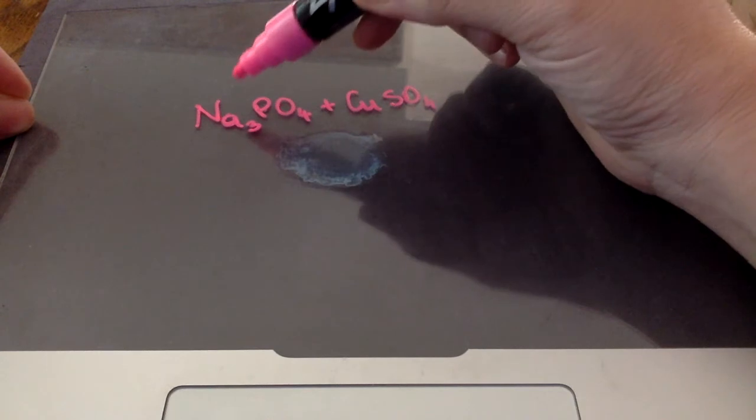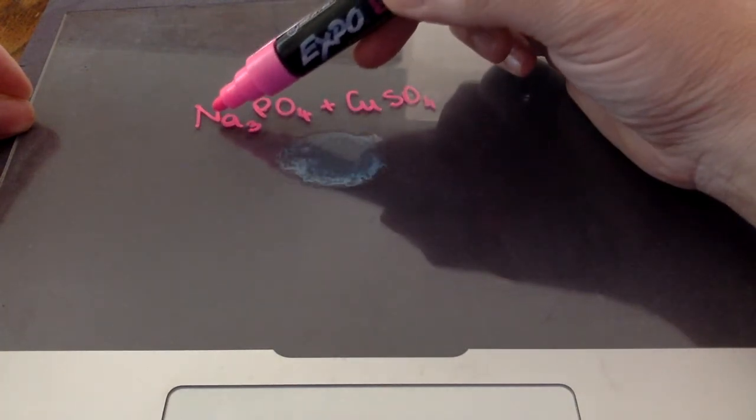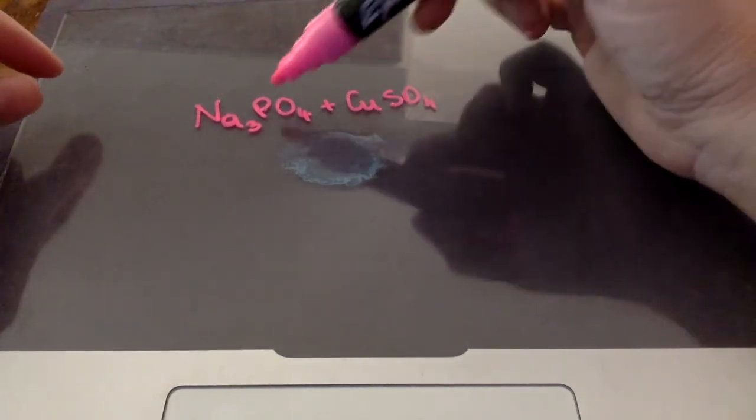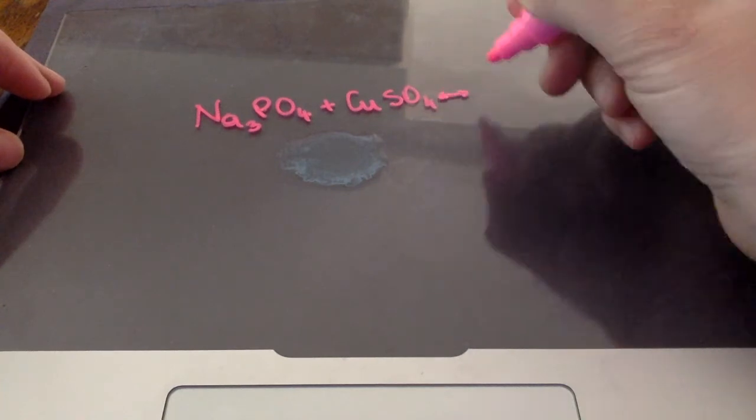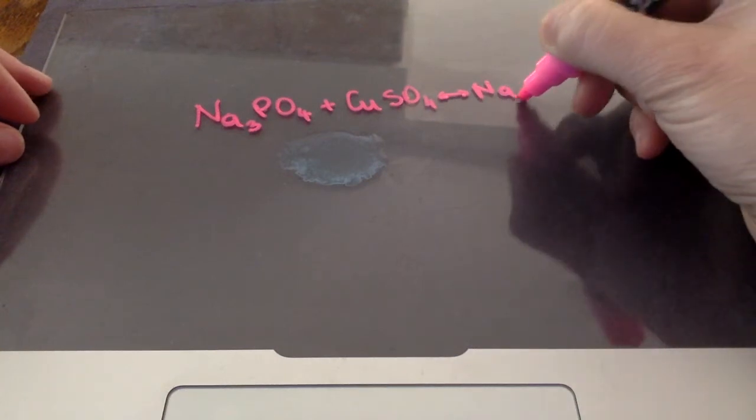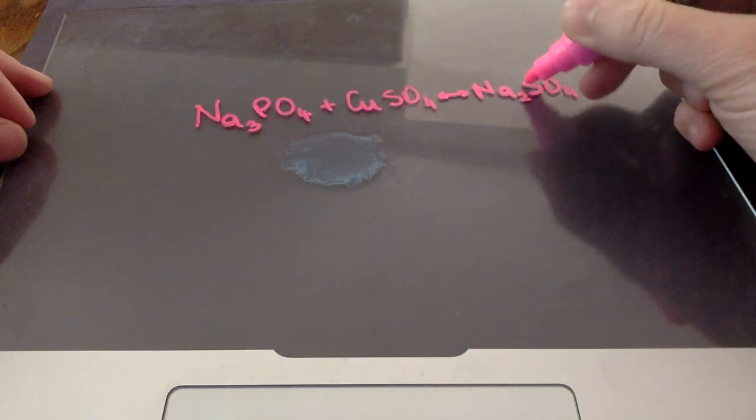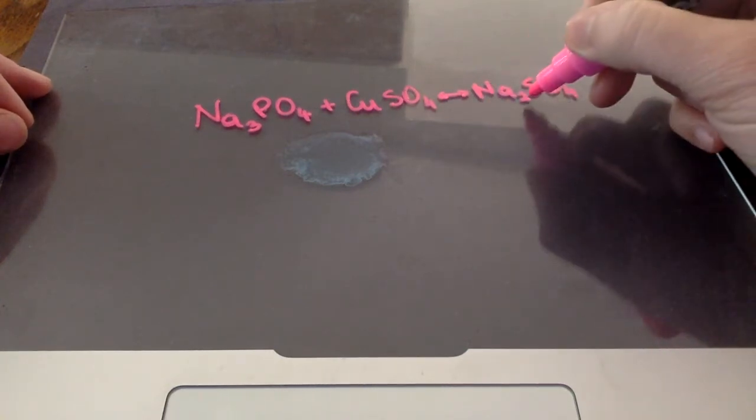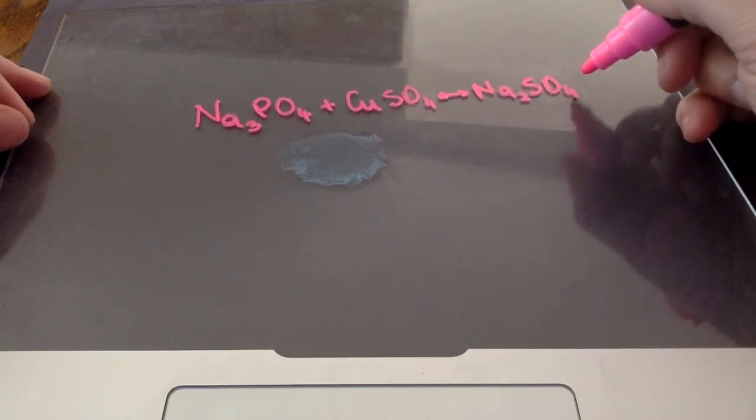Now, what I'm doing is, it's a double displacement reaction. I am replacing the positive ions. I'm swapping them, and I'm swapping negative ions. So, this gives me sodium sulfate. And remember, SO4 has a 2- charge. So, sodium has a plus 1, so I need 2 sodiums to balance the negative charge of the sulfate.